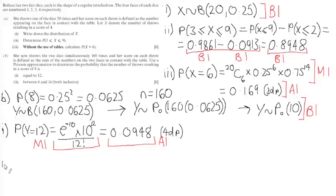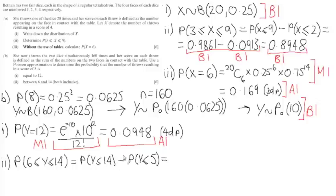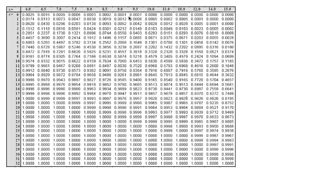Part two wants us to find the probability that Y is between 6 and 14 inclusively. Just like the binomial, this is P(Y ≤ 14) minus P(Y ≤ 5). We can now use our Poisson tables. We're looking for Poisson mean of 10. Looking across the top, here is my mean of 10. I'm just going to rule down the outside here so we can see what column I'm working with so I don't make any silly mistakes.